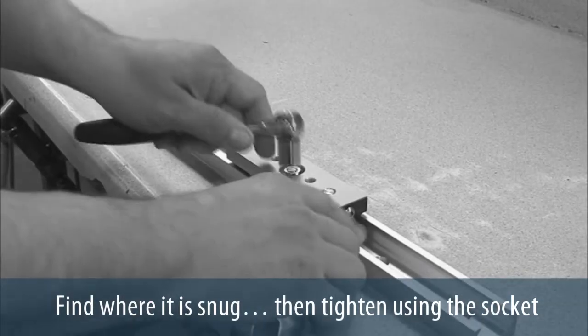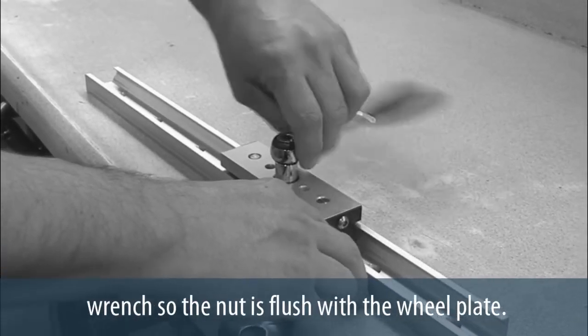Find where it is snug, then tighten using the socket wrench so the nut is flush with the wheel plate.